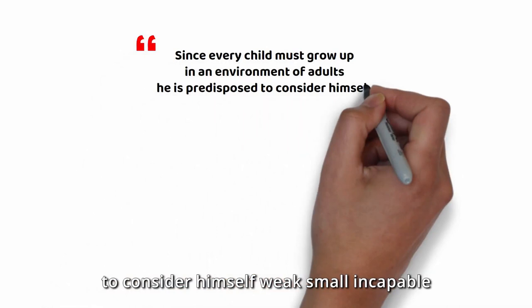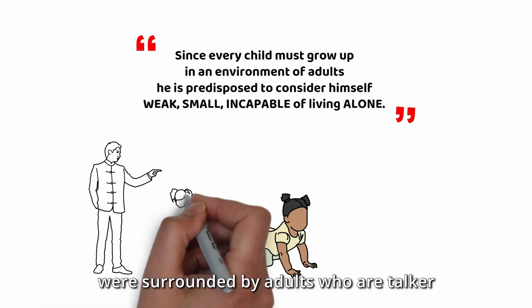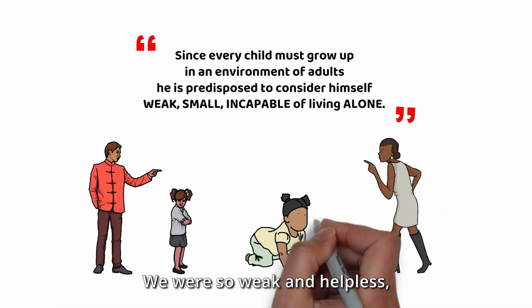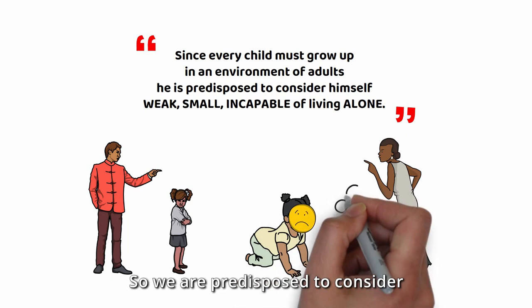Since every child must grow up in an environment of adults, he is predisposed to consider himself weak, small, incapable of living alone. When we were toddlers, we were surrounded by adults who are taller, stronger, and smarter than us. We were so weak and helpless. We must depend on them.